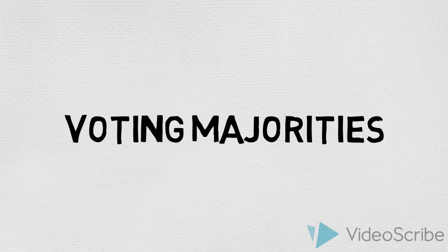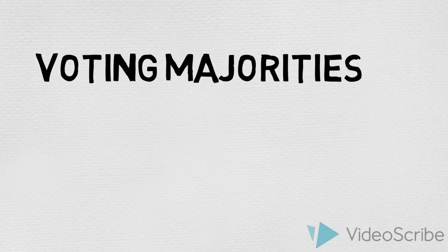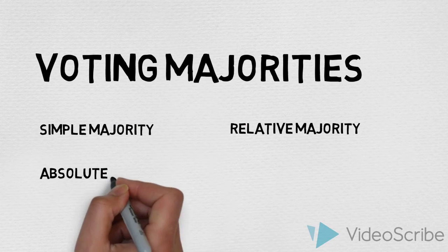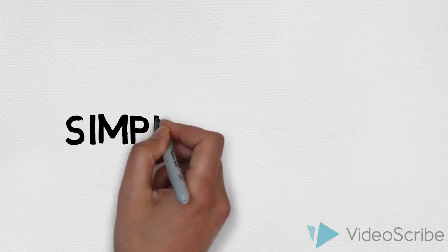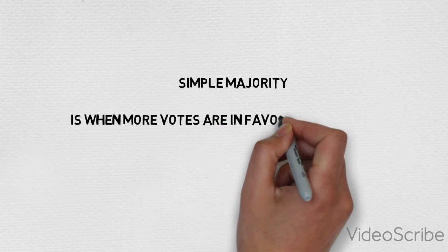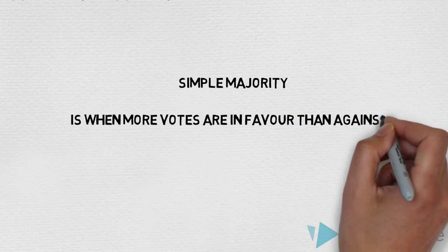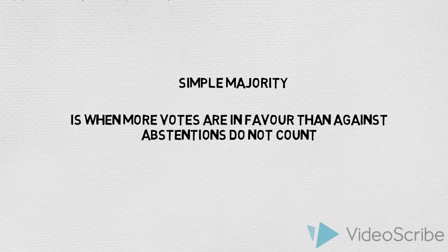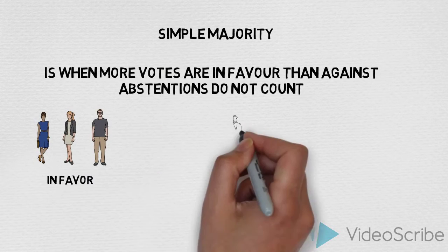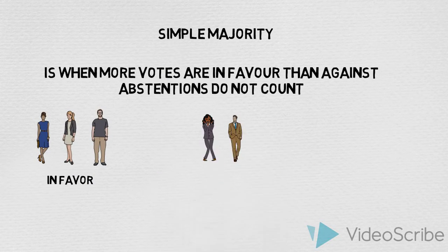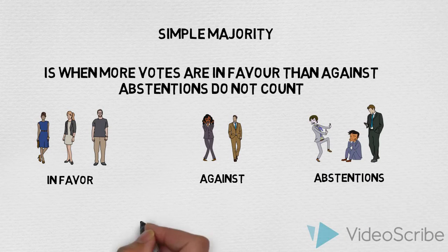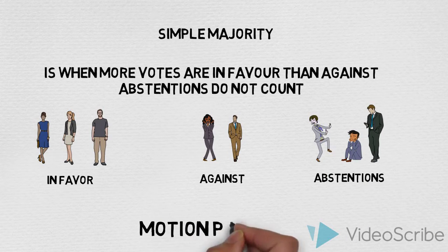Voting majorities. There are four voting majorities: simple majority, relative majority, absolute majority, and two-thirds majority. Simple majority is when more votes are in favor than against, and abstentions do not count. For example, here there are three in favor and two against; abstentions do not count, so the motion passes.